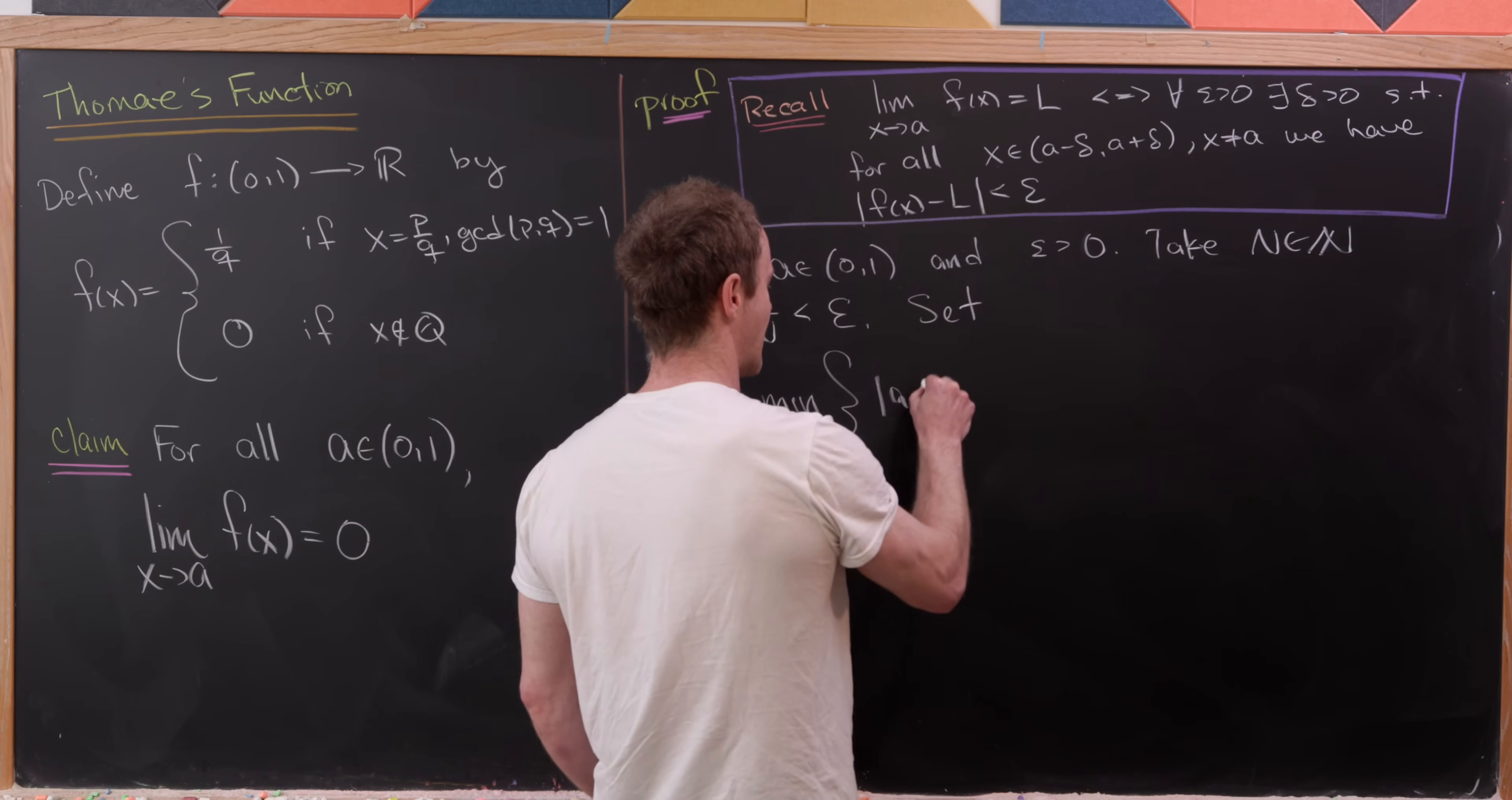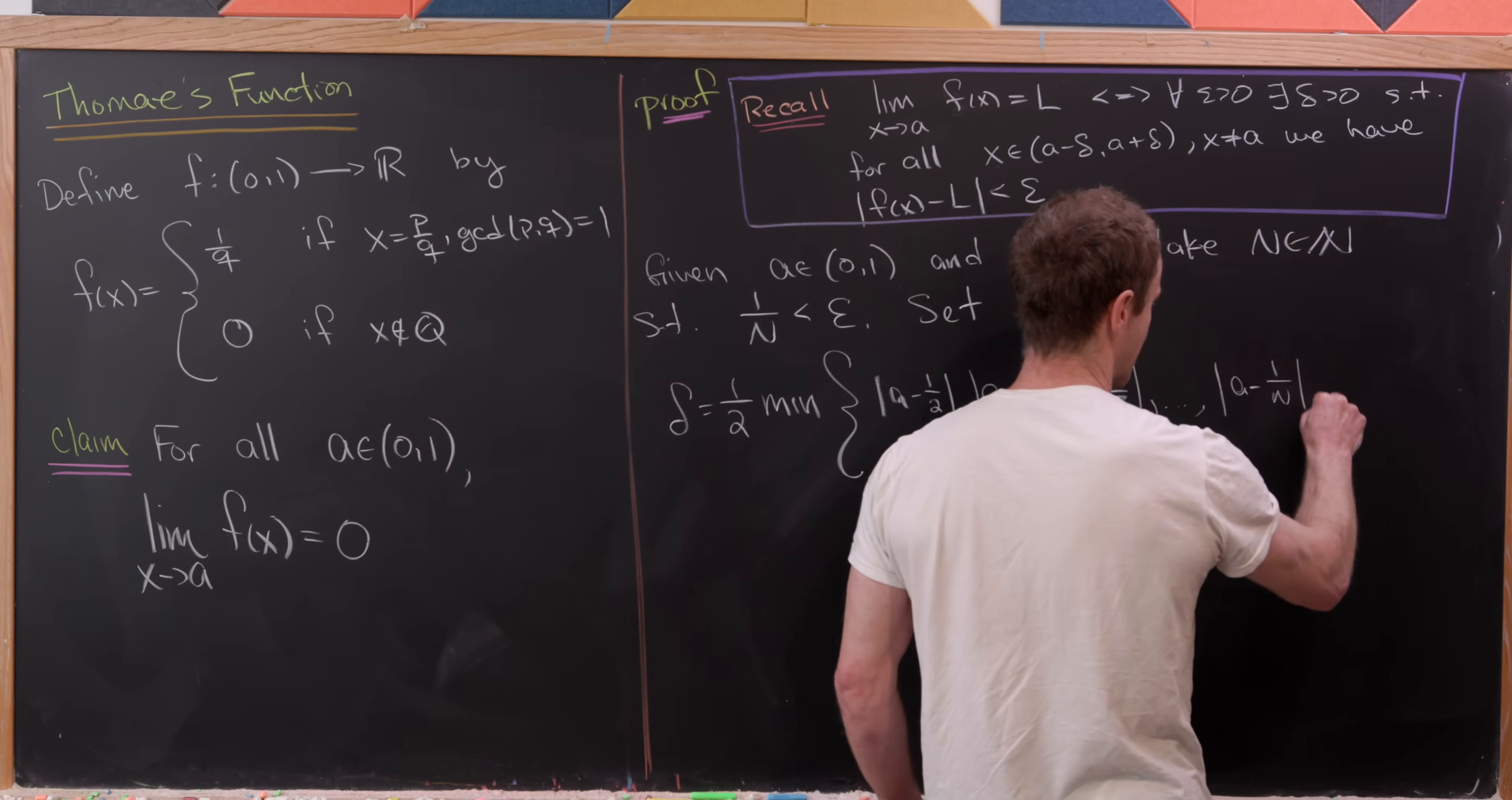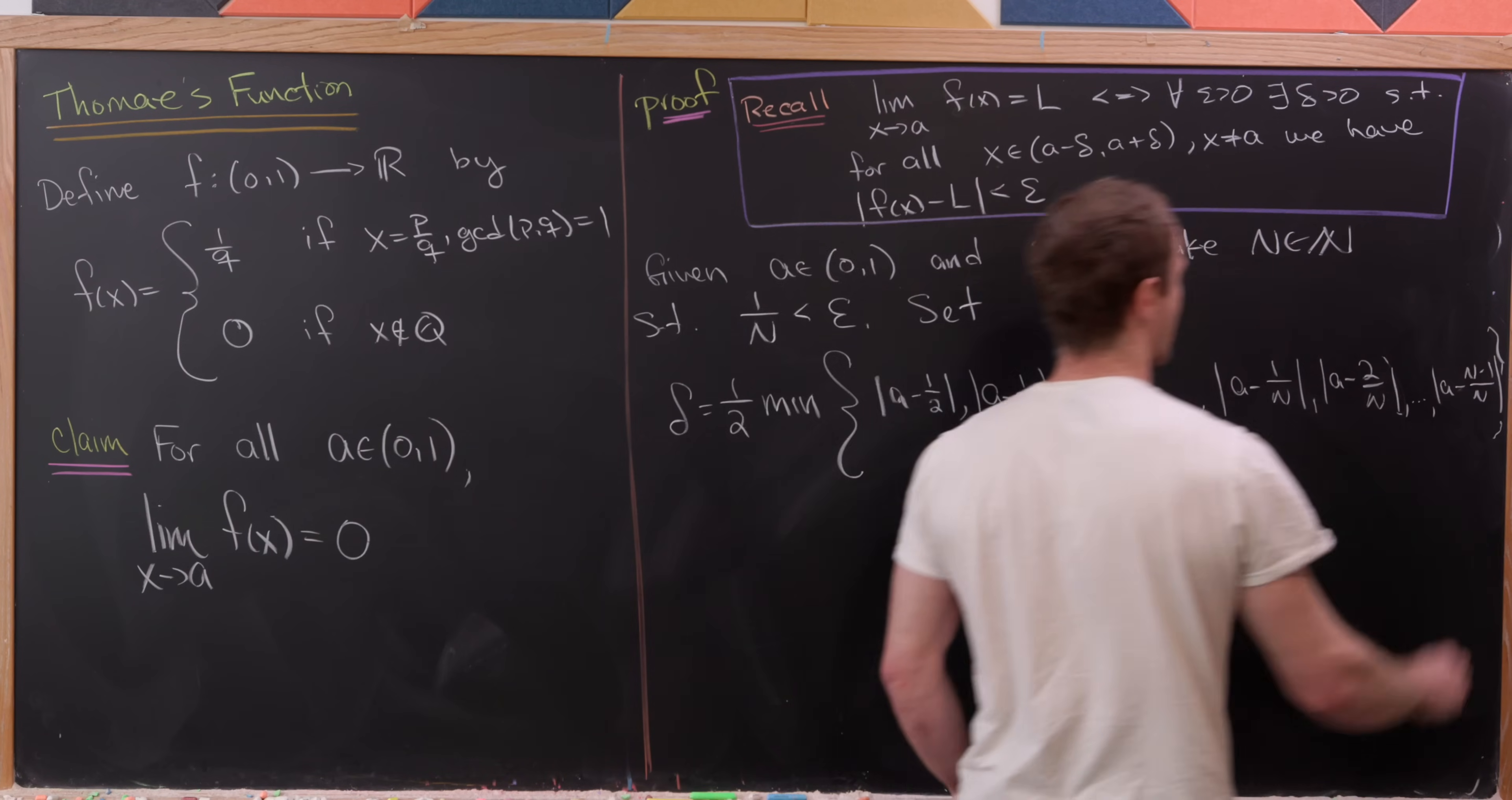So that set will be of the following form. So we'll have the absolute value of a minus a half, the absolute value of a minus a third, the absolute value of a minus two thirds, dot dot dot, the absolute value of a minus one over N, the absolute value of a minus two over N, and then dot dot dot, finally, the absolute value of a minus N minus one over N. Okay, cool.